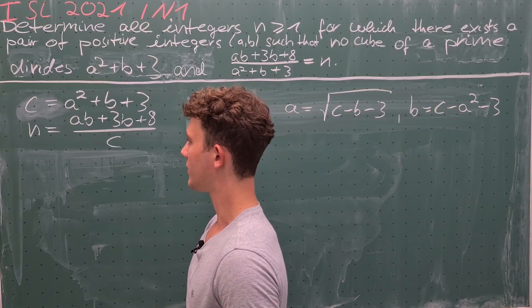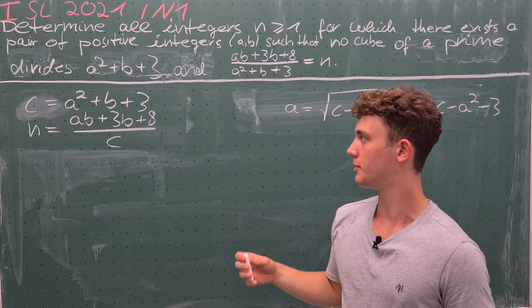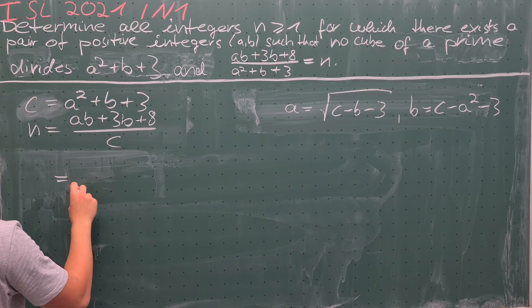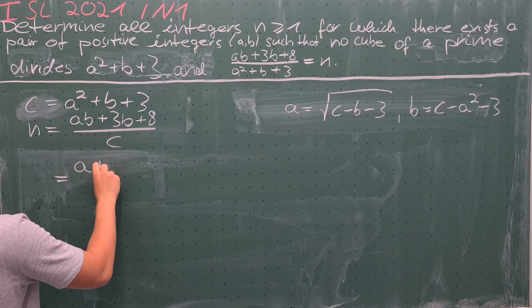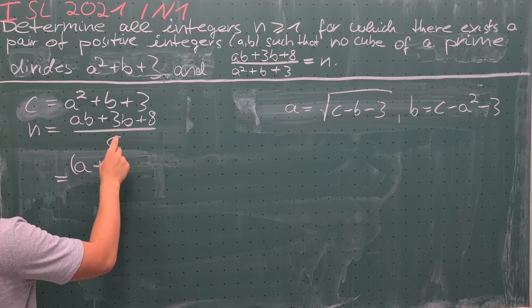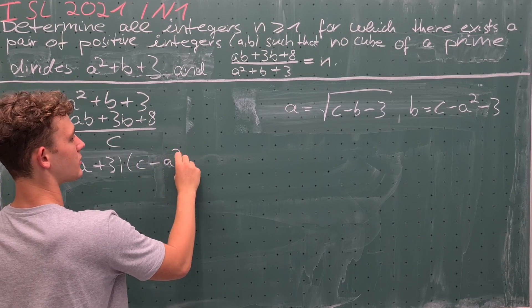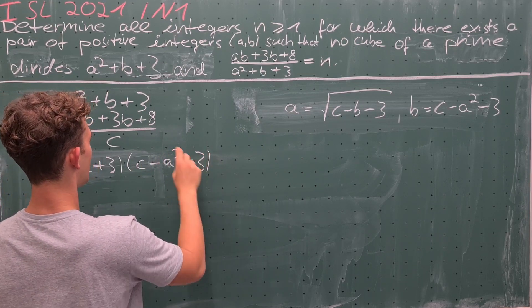and therefore we will replace b in our equation to obtain that n equals (a + 3) times b, but b is just c - a² - 3 plus 8,